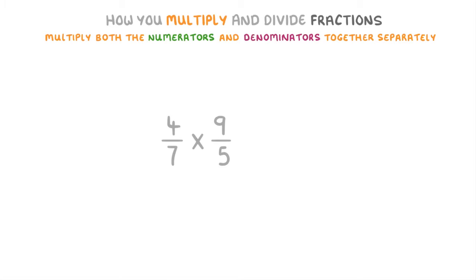For this next question we have to multiply 4 over 7 by 9 over 5. So we multiply 4 by 9 to get 36, and then 7 by 5 to get 35. So we end up with 36 over 35 as our answer. And this time there's no need to do anything else, because that can't be simplified.